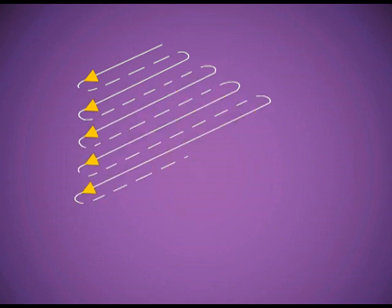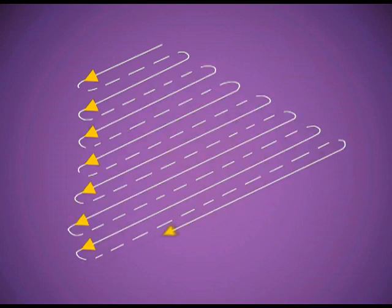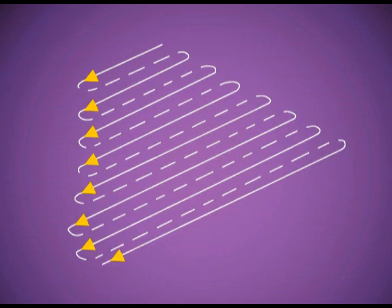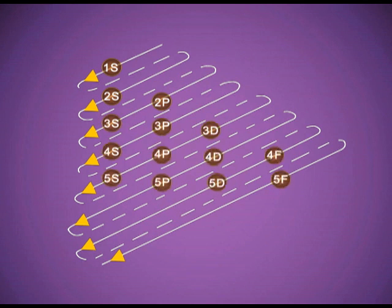This is the series showing which orbital will be filled first, in the order of increasing energy: 1s is filled first, then 2s, 2p, 3s, 3p, 4s, and so on.